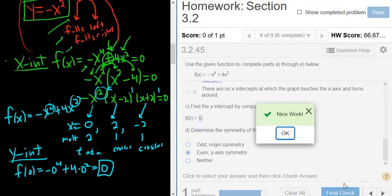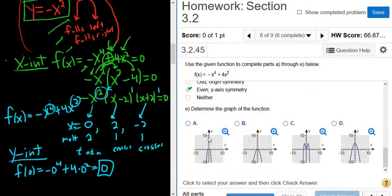Wow, they don't mess around. Final check. So if you get that part wrong, unfortunately, you have to do the whole thing over again. That's pretty evil. Now, determine the graph of the function. So it's multiple guess. No, I'm kidding. We'll work it out.